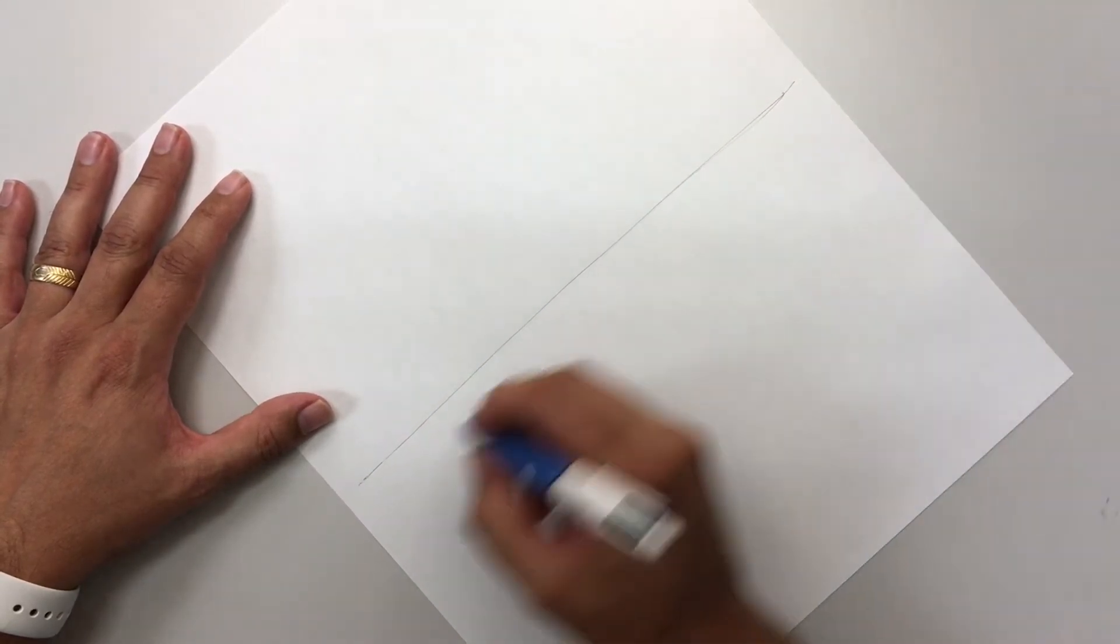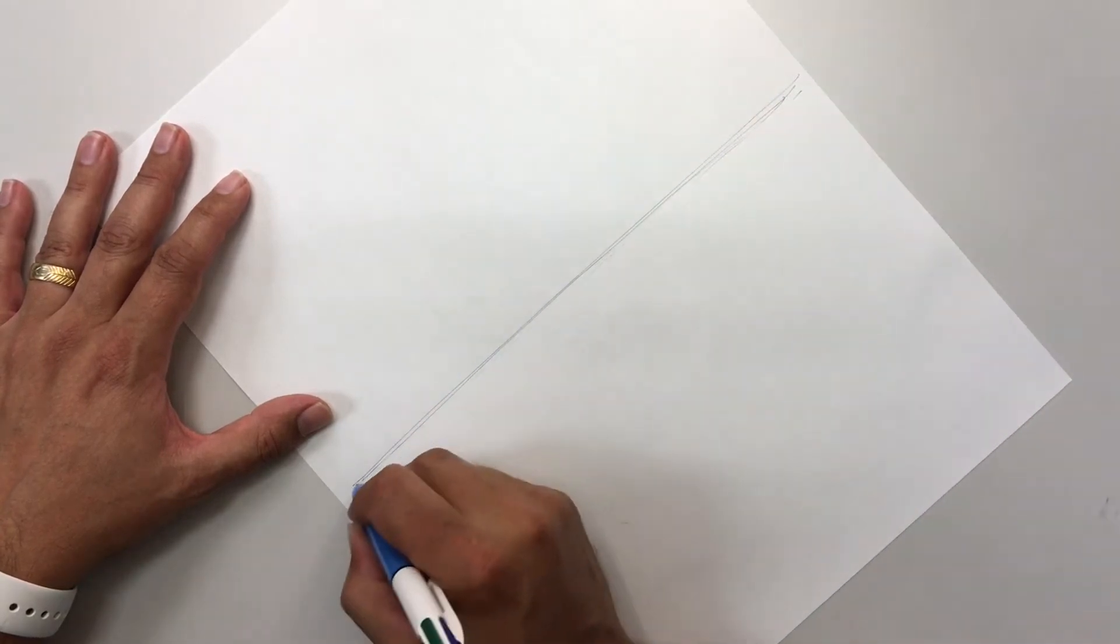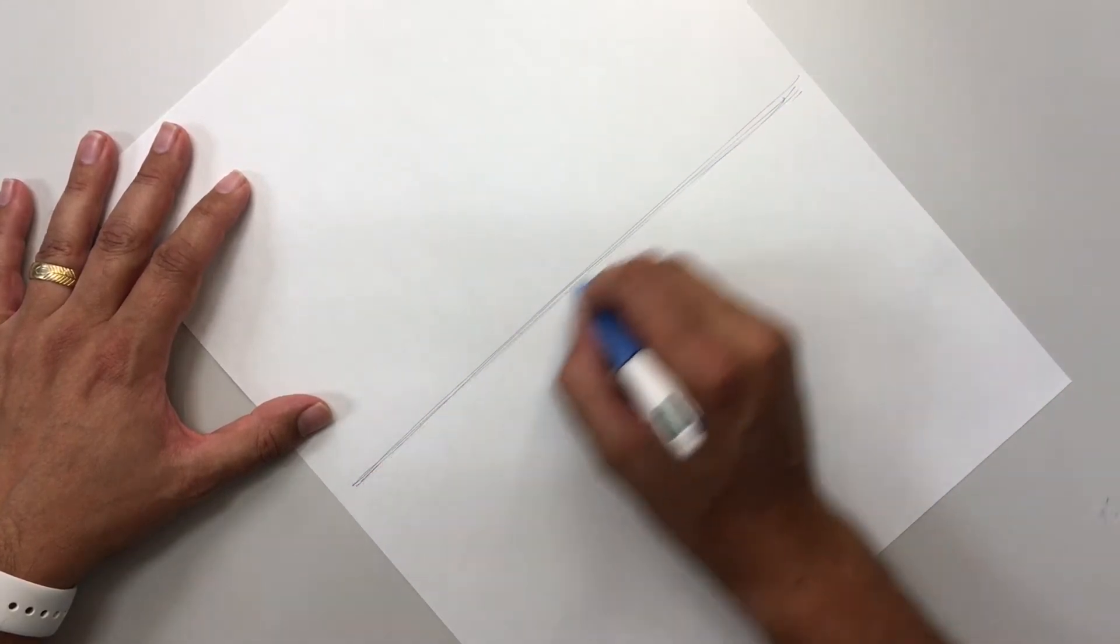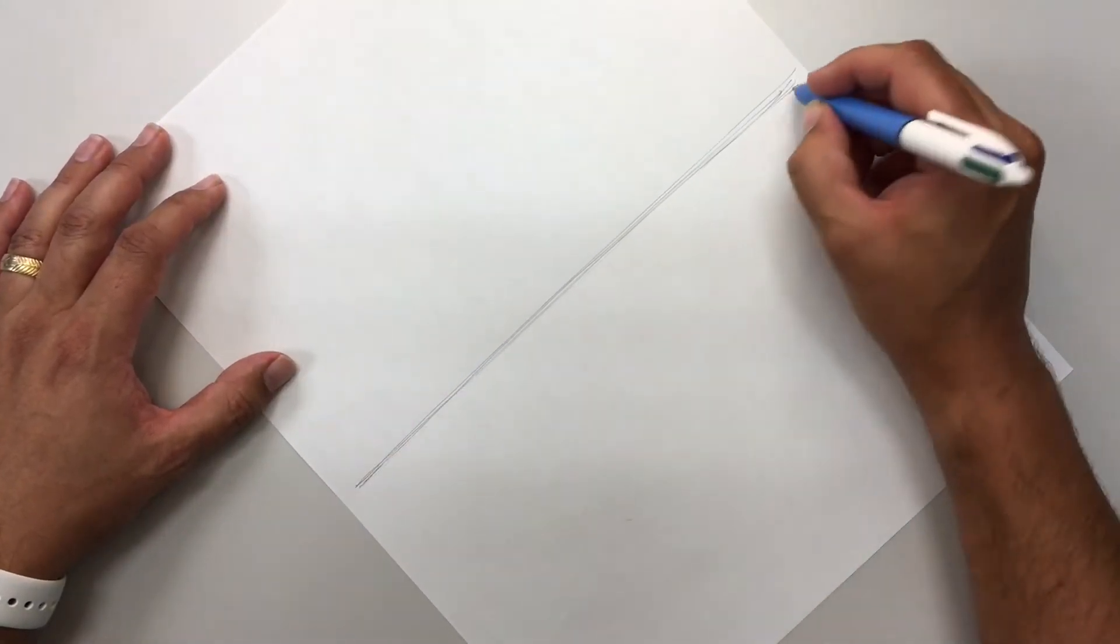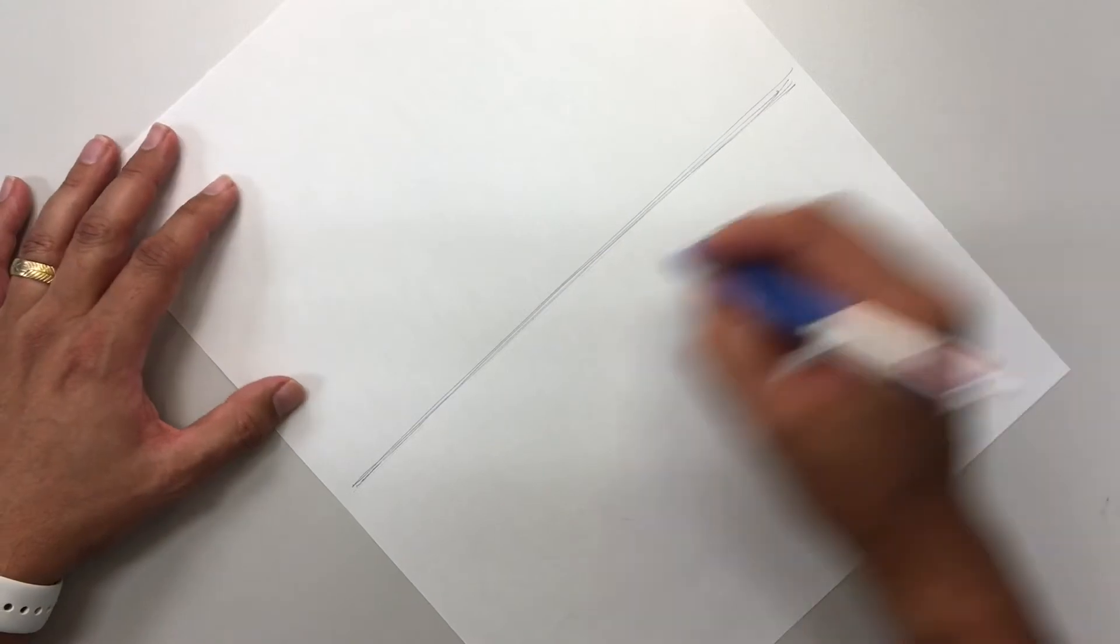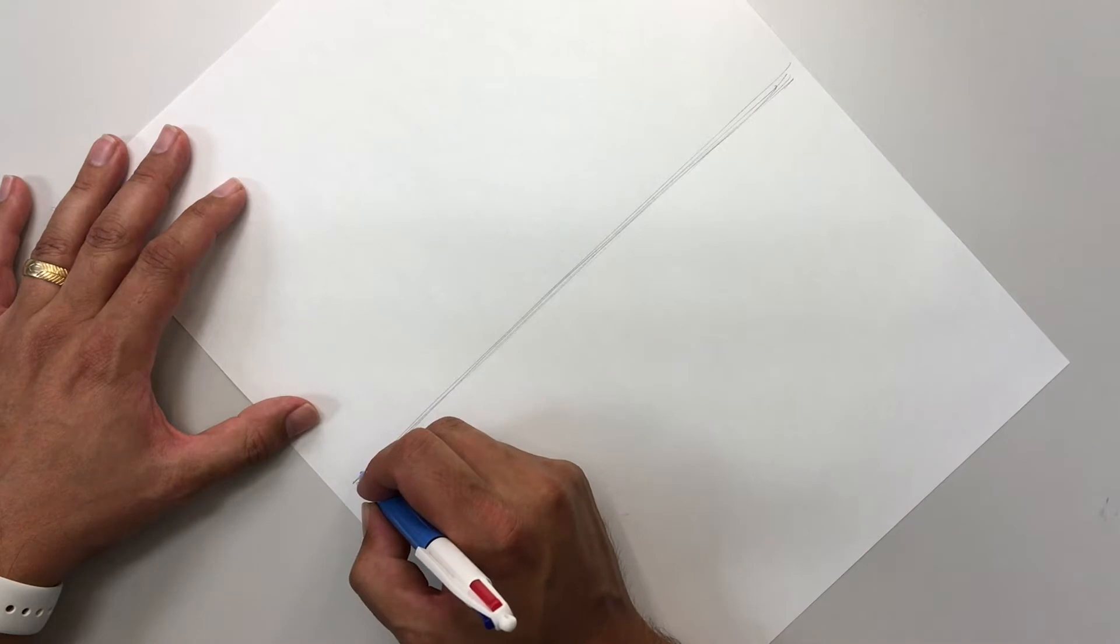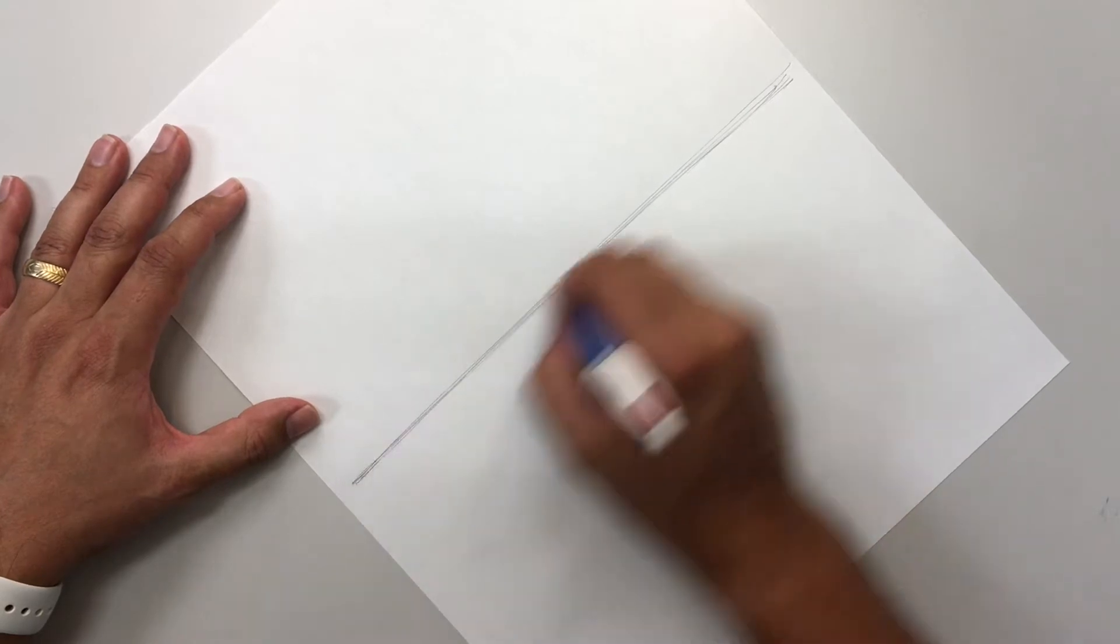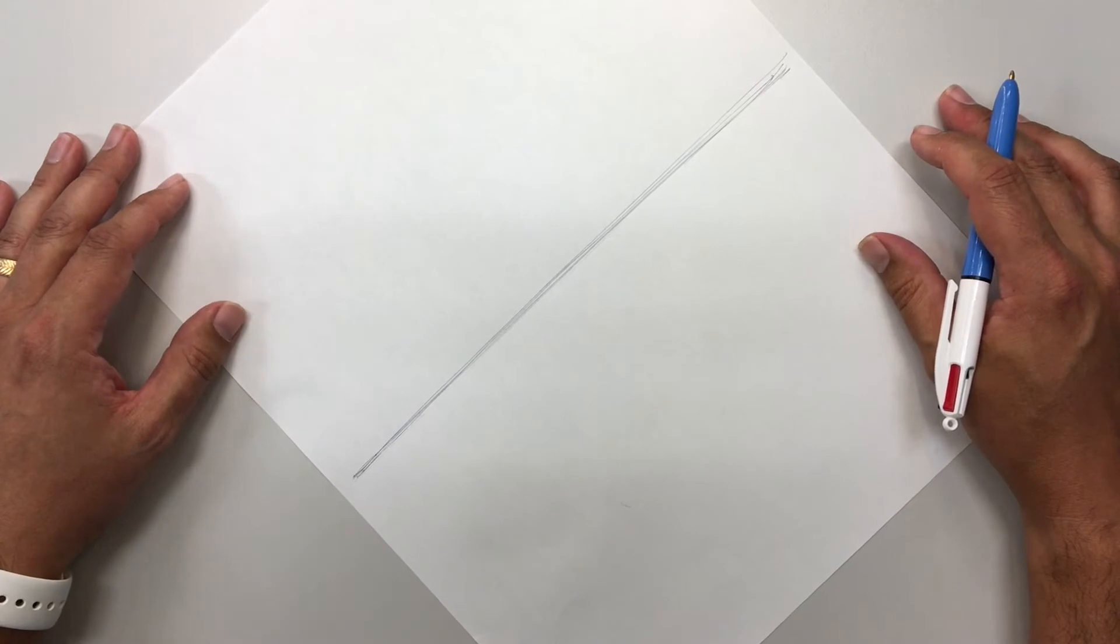So what I want you to do, draw a straight line. You can draw multiple times. Just keep drawing a straight line, cutting your paper in half. And I want you to take up, notice the timing. If you can watch that second counter up there, it's probably less than a second. Somewhere about a second it takes me to draw that.